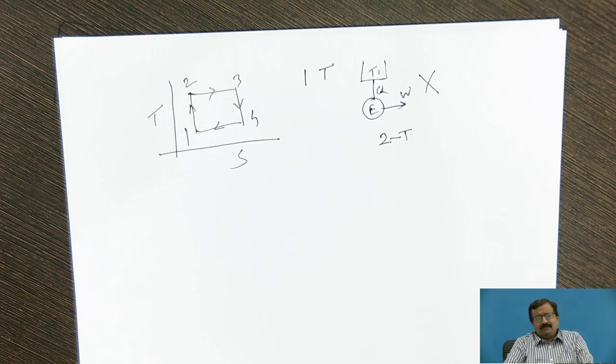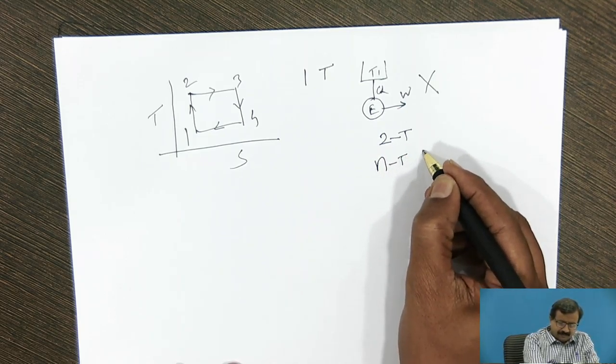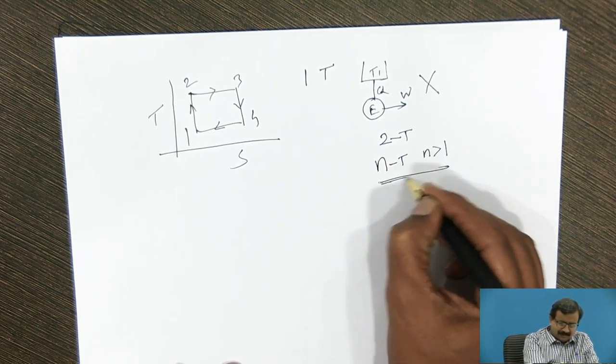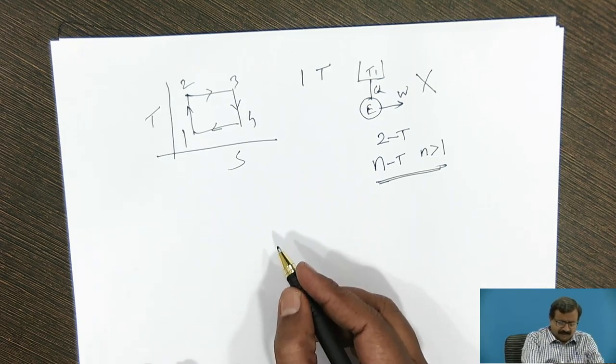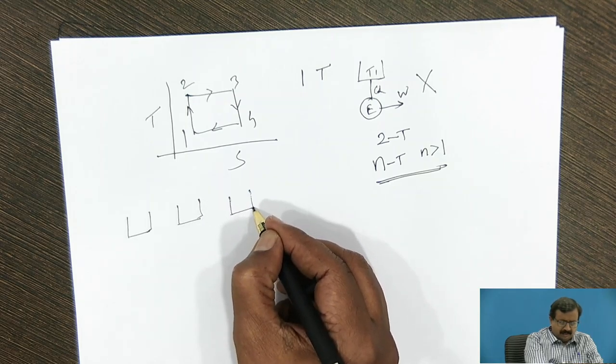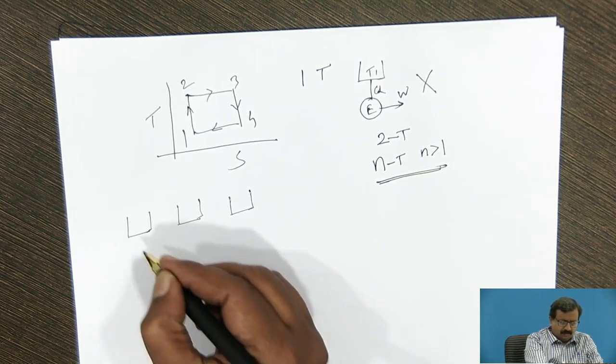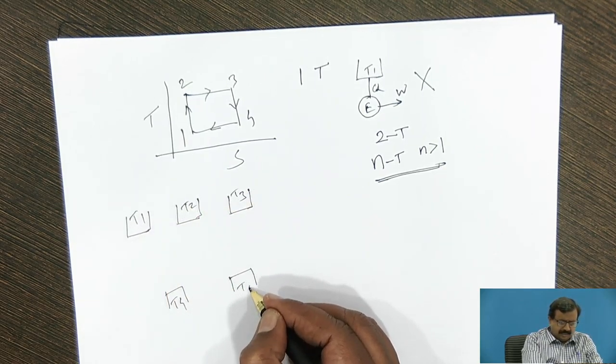Now naturally, the question comes, is it possible to have an engine with 3T? That is 3 temperature reservoirs? Why not, we can. So generally we say that nT engine, n is greater than 1, is the valid definition of heat engine. If I have n reservoirs, I have got one reservoir T1, second reservoir T2, third reservoir T3, T4, and T5.